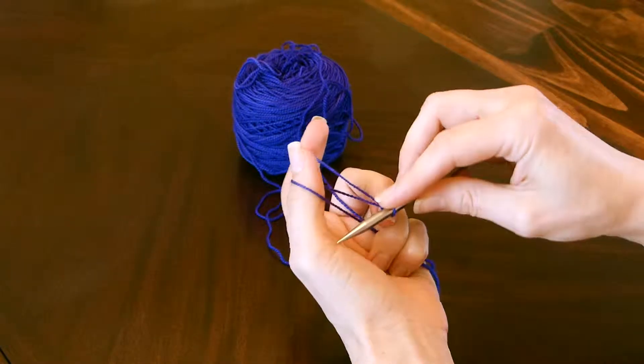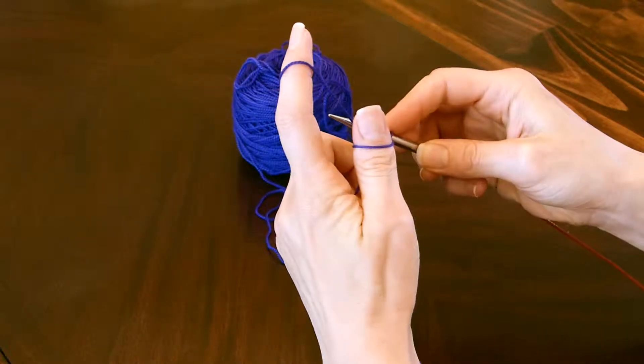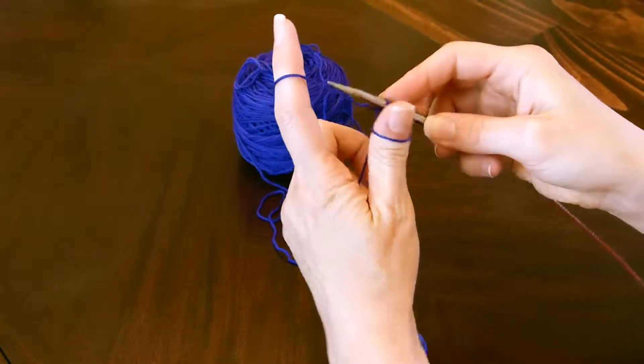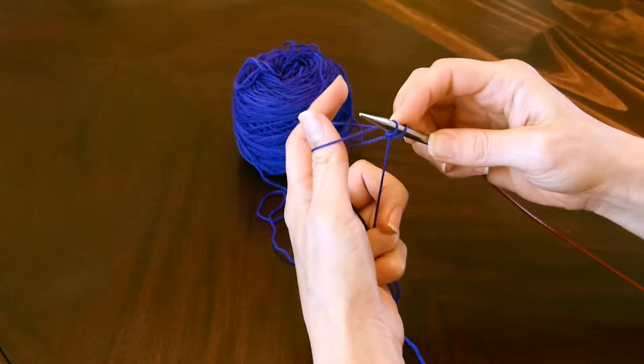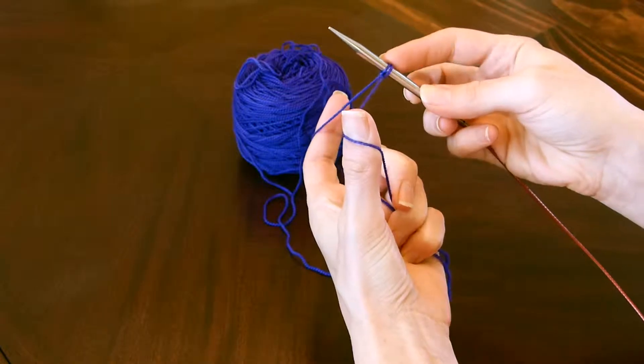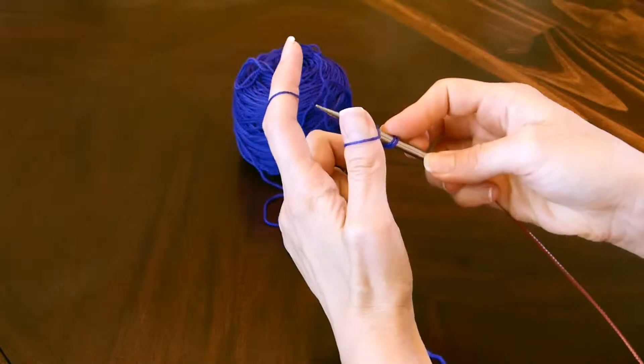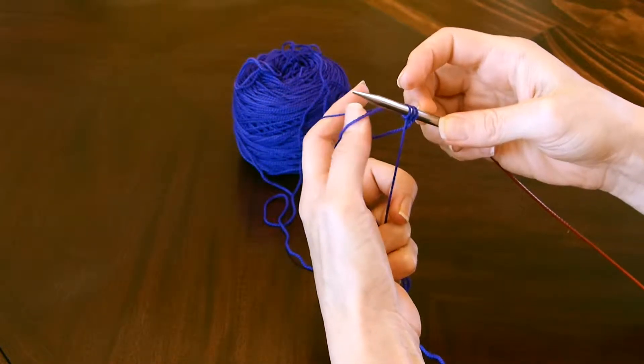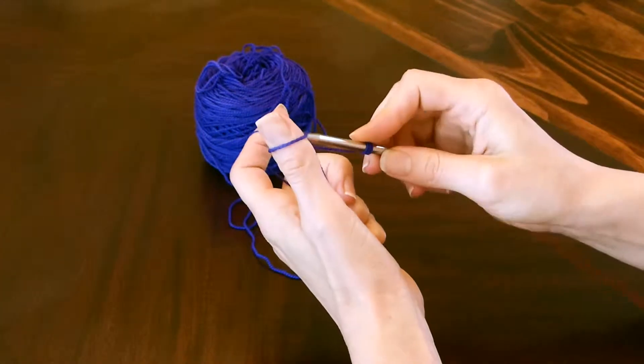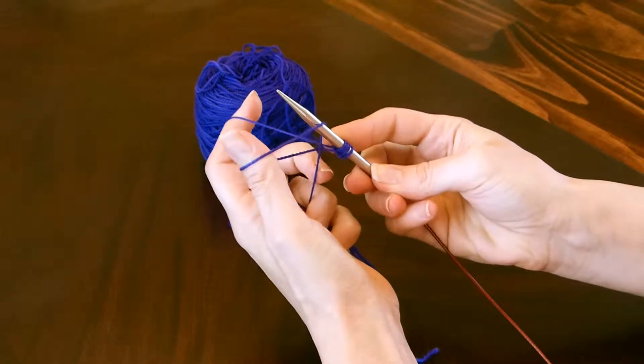Now we're going to go with the needle under the yarn on the thumb, then pull this one through, releasing the yarn on the thumb and grabbing it again, and tighten it up. Here we go again: go under, grab it, release it, tighten it up. Bring the yarn around the thumb again and continue to cast on like that.